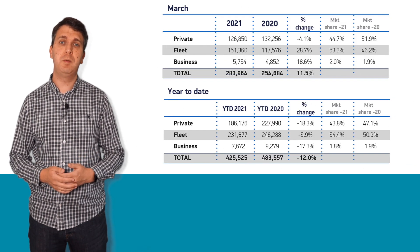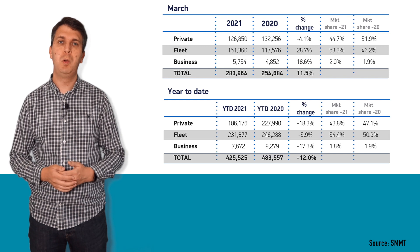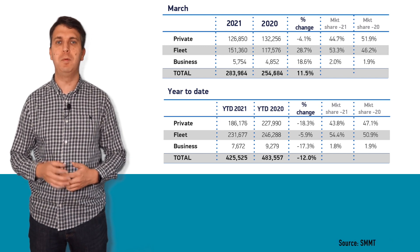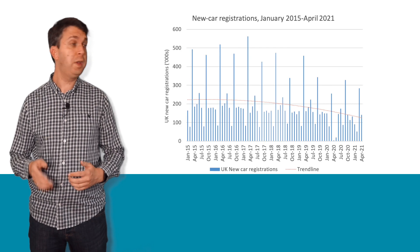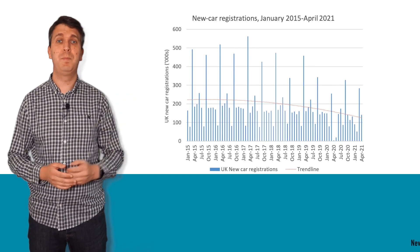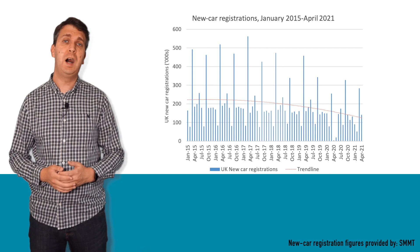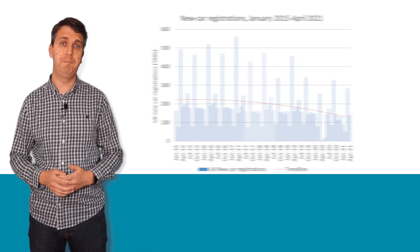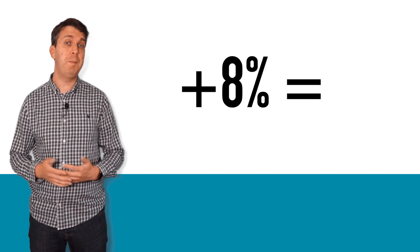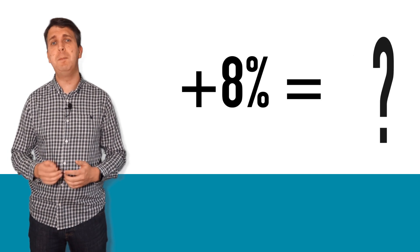Traditional registration figures compare each month to the same period the year before, with a year-to-date tracking the performance so far. As we can see here, this leaves us with a lot of lines that don't really say anything other than how the market is doing at that point in time. Registrations may be 8% up in a month, for example — but what does that really mean?